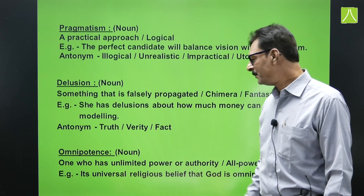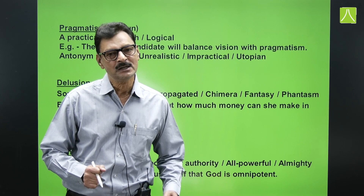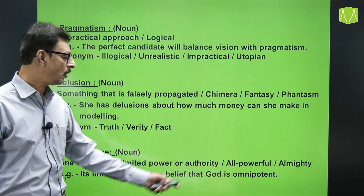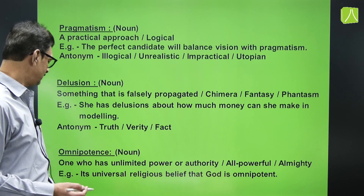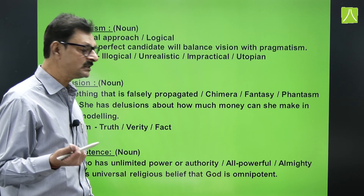'Omnipotence' refers to one who has unlimited power or authority. The word comes from omnipotent — omni is a root word meaning all, and potent means potential. So one who has the potential for everything is omnipotent. Synonyms are almighty and all powerful. Example: 'It is a universal religious belief that God is omnipotent.'